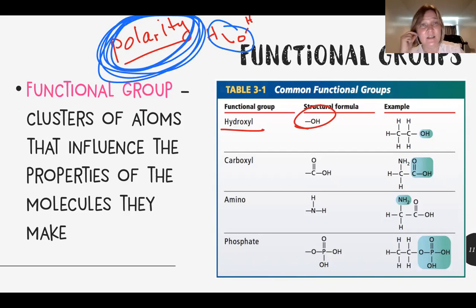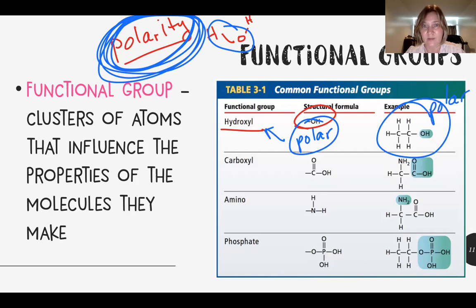Because of the difference in electronegativities, oxygen will take the electrons most of the time. So because OH is polar, that's the property of this functional group. That means that it makes this compound also polar. When a functional group is in a compound, it gives that compound the same property.